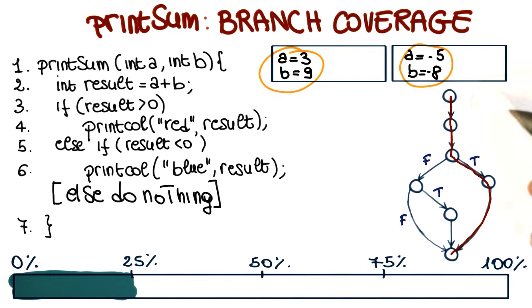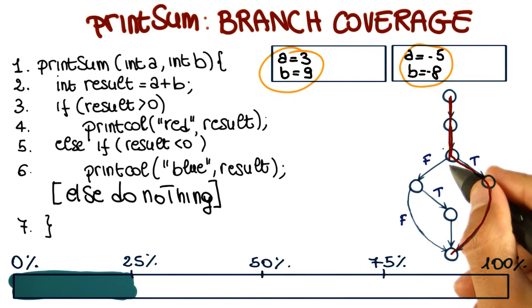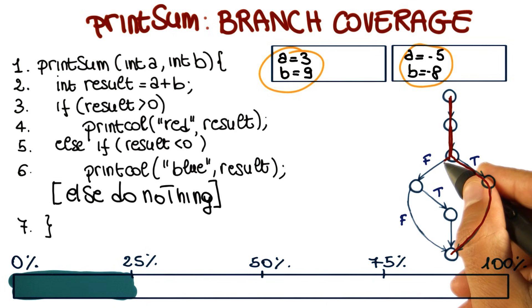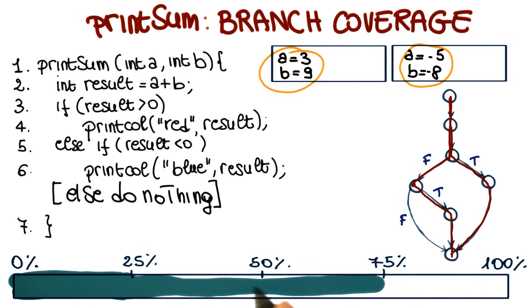Now when we run the second test case, again, we follow this path, we get to the first if. In this case, the predicate of the if is false, therefore we go this way. We reach the second predicate, the second if. The result is true, so we follow the true branch, and therefore we cover these additional two branches. So at this point, we are at 75% branch coverage.